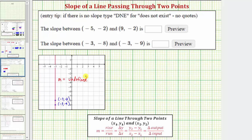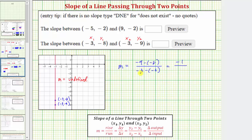Let's go ahead and verify this by using the slope formula. To keep things organized, let's call the first ordered pair x sub one comma y sub one, and the second ordered pair x sub two comma y sub two. So the slope m is equal to y sub two minus y sub one, which is negative nine minus negative eight, divided by x sub two minus x sub one, which is negative three minus negative three. Simplifying, negative nine minus negative eight equals negative nine plus eight, which is negative one, divided by negative three minus negative three, which equals negative three plus three, which equals zero. And remember, division by zero is undefined, verifying the slope of our line is undefined.